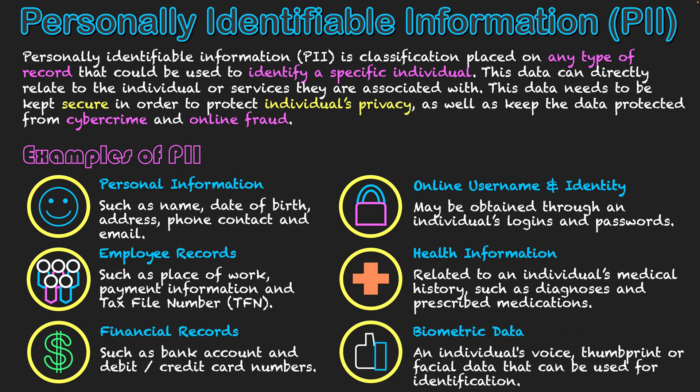Finally, we have biometric data — an individual's voice, thumbprint, and face. All of that can now be used to recognize an individual through digital systems. A lot of systems, such as my iPad, have facial recognition — when I walk up to it, it unlocks because it sees my face. This technology has come into effect in recent years and is used to secure data, but this data also helps unlock features that can be used to access systems. So once again, it is data that is personal to us and that we need to protect.